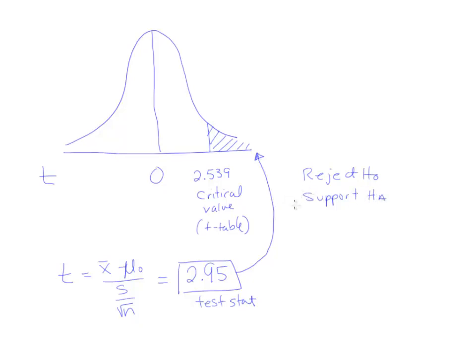If your claim is HA, you would say you support HA. If your claim is H0, you would say you reject H0. This is your pair of initial conclusions.